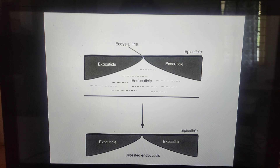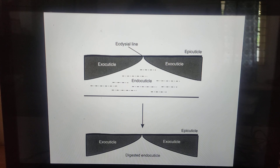The second step is removal of the old cuticle. Peristaltic movements of the body and the lubricant action of the molting fluid help in removal of the old cuticle. During each molting, the cuticular covering of the body, legs, internal lining of the foregut, hindgut, and trachea are discarded.